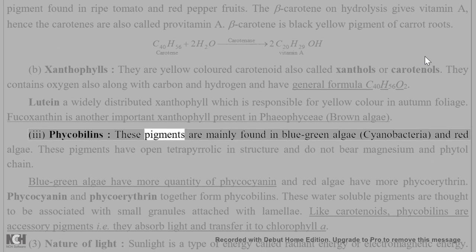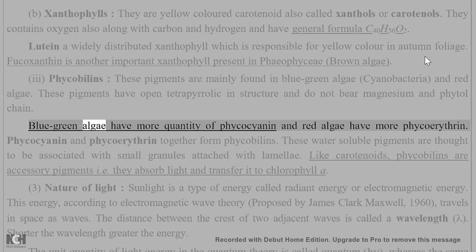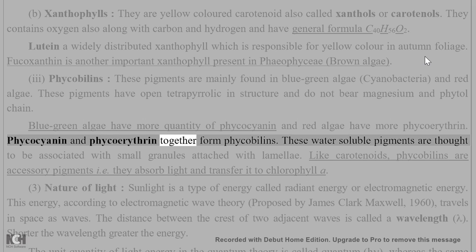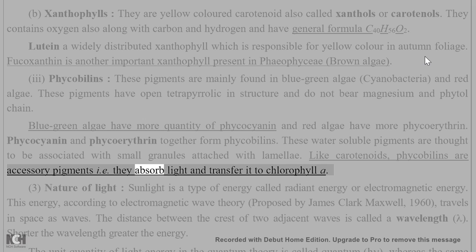Phycobilins are pigments mainly found in blue-green algae (cyanobacteria) and red algae. These pigments have an open tetrapyrrolic structure and do not bear magnesium or a phytol chain. Blue-green algae have more phycocyanin, and red algae have more phycoerythrin. Phycocyanin and phycoerythrin together form phycobilins. These water-soluble pigments are thought to be associated with small granules attached to lamellae. Like carotenoids, phycobilins are accessory pigments that absorb light and transfer it to chlorophyll a.